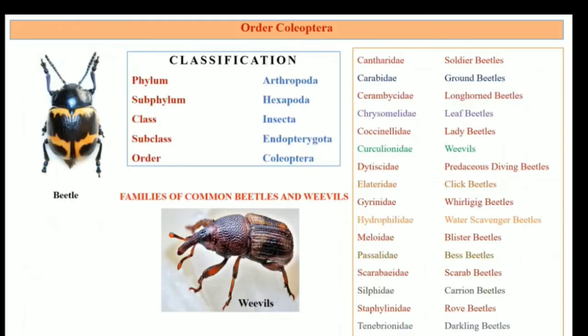Order Coleoptera has families including Cantharidae, which are the soldier beetles; Carabidae, which are the ground beetles; Cerambycidae, which are the longhorn beetles; Chrysomelidae, which are the leaf beetles; Coccinellidae, which are the lady beetles; Porcellionidae; Dytiscidae, which are the predaceous diving beetles; and Elateridae, which are the click beetles.